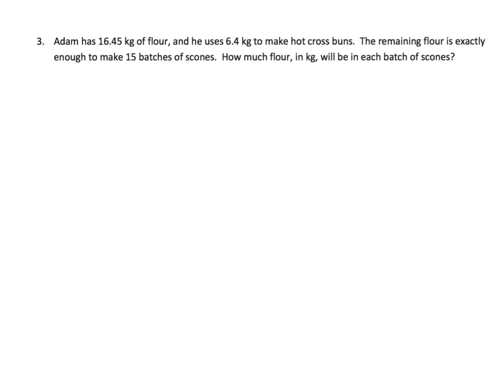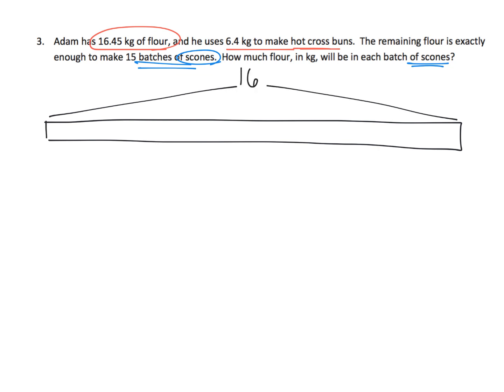So in this problem, Adam has 16.45 kilograms of flour. He uses 6.4 kilograms to make hot cross buns, and the remaining flour is exactly enough to make 15 batches of scones. How much flour in kilograms will be in each batch of scones? Well, let's draw that picture first off. So this huge tape diagram represents the 16.45 kilograms of flour. Now we're going to begin by saying, well, let's just chop off this much right away. So this much is getting chopped off and that's 6.4 kilograms because that's for the hot cross buns.